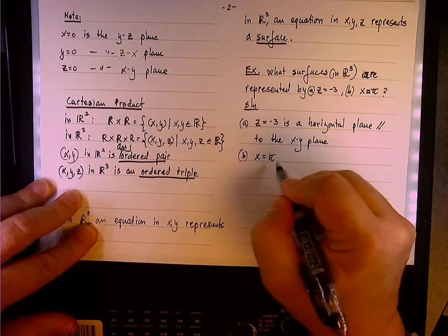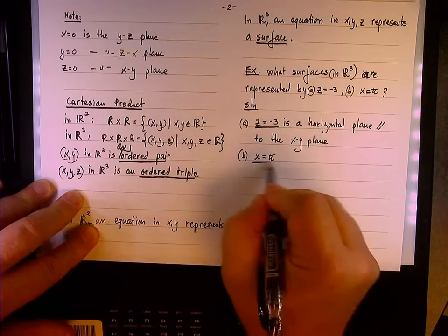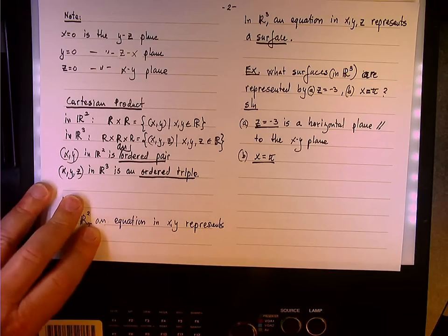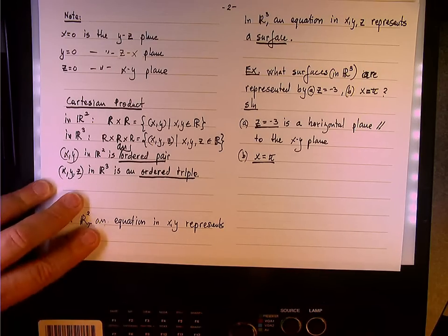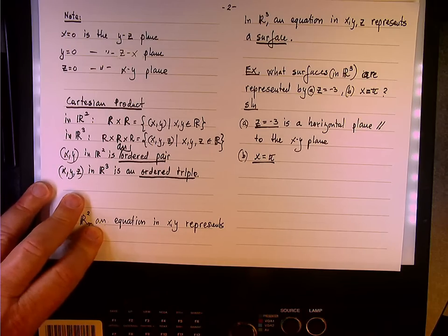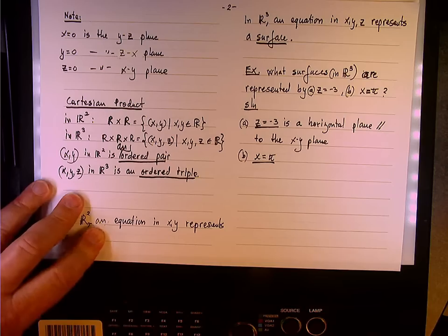All right, so it will make the next one, x equals pi, a little bit easier. Somebody else want to answer this? It will be x equals constant, yeah you're right, you said vertical plane.